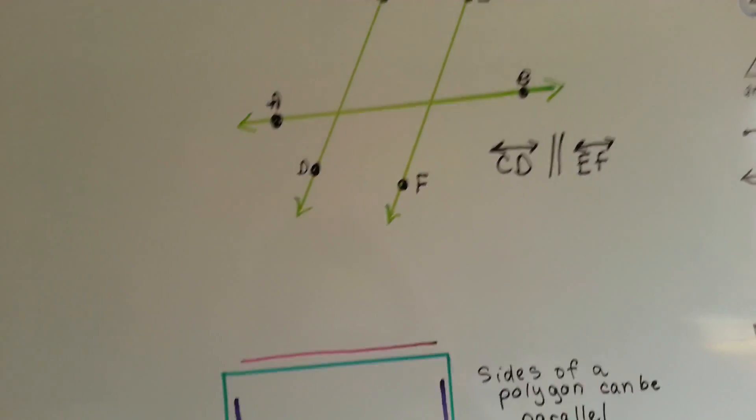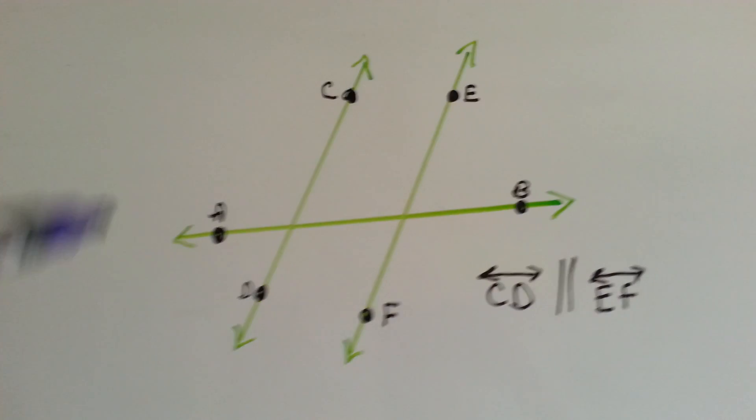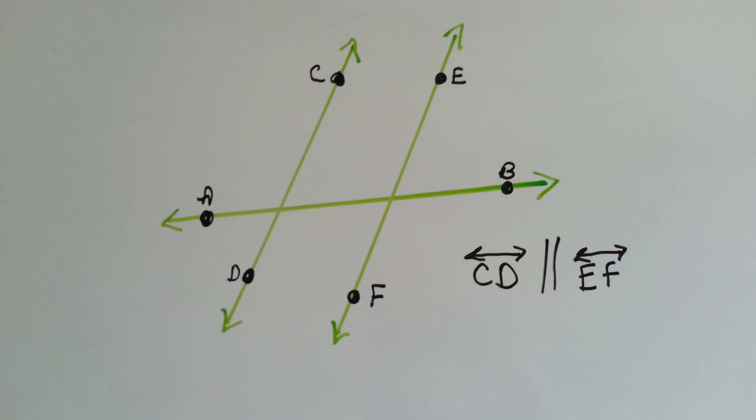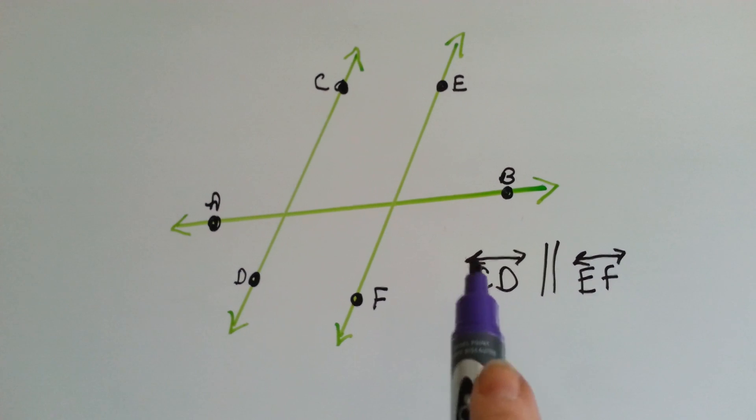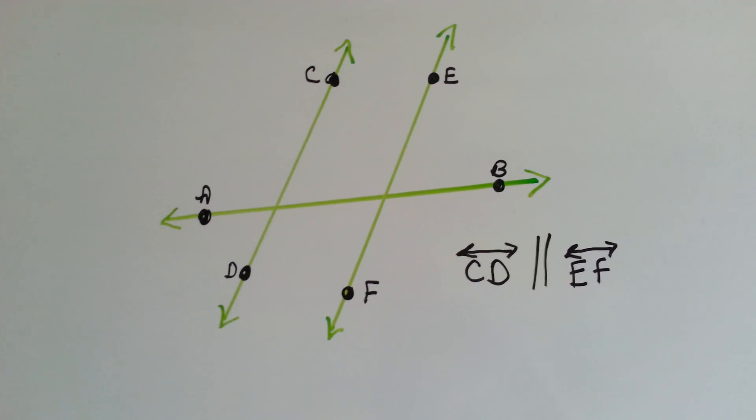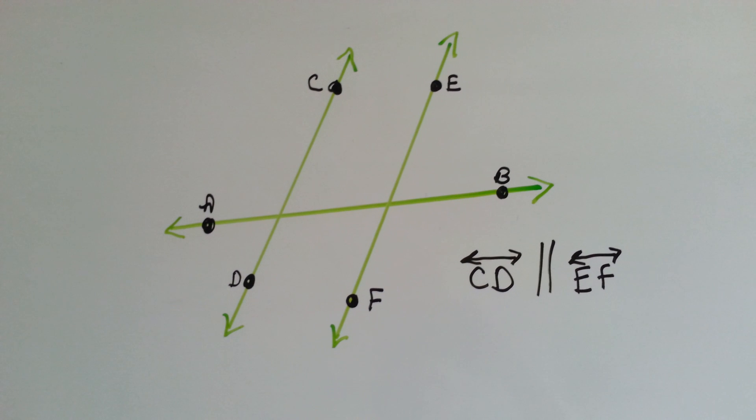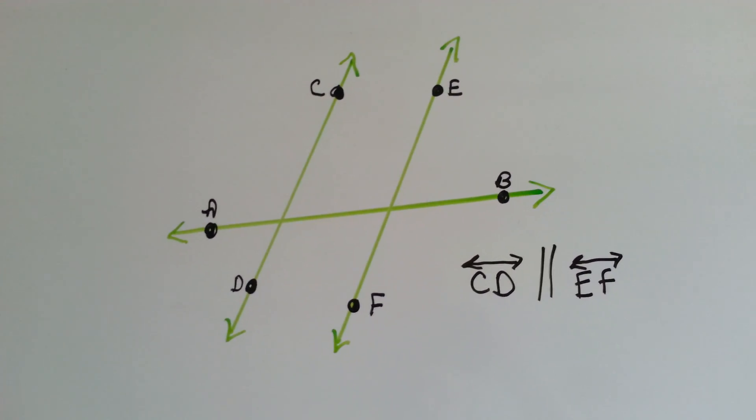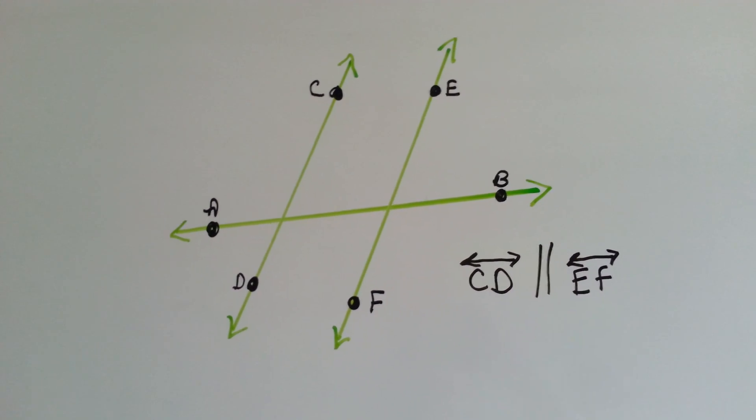So when you see two lines that are going the same direction like that, they're parallel. This is line CD is parallel to line EF. Can you see that? CD is parallel to EF. That's how you read it. That's how you write it.